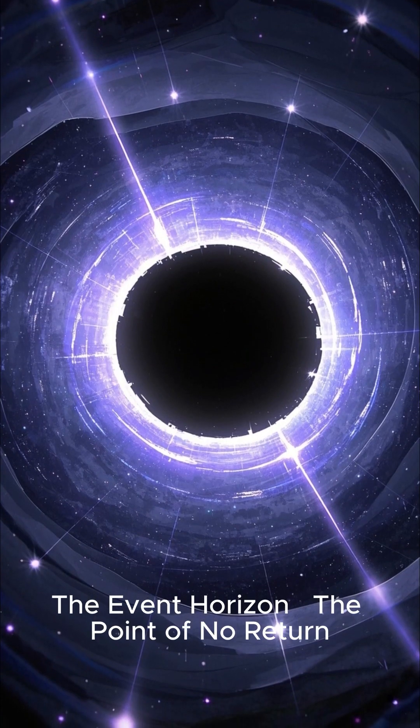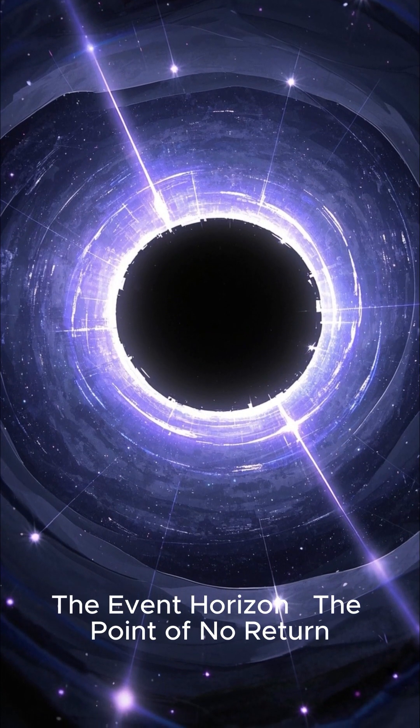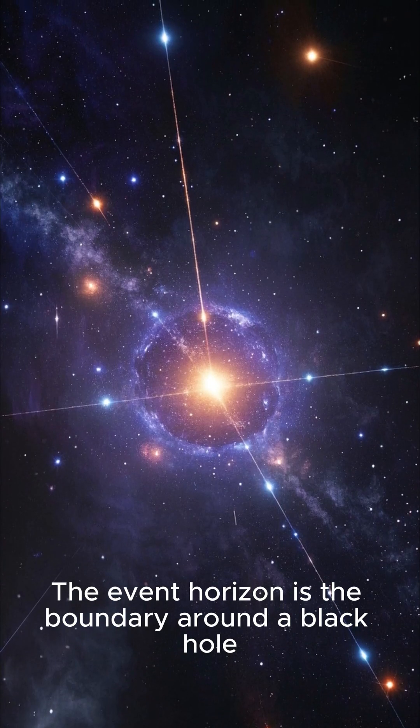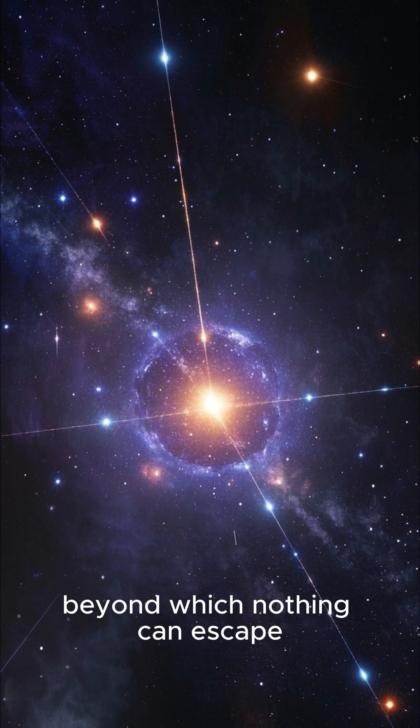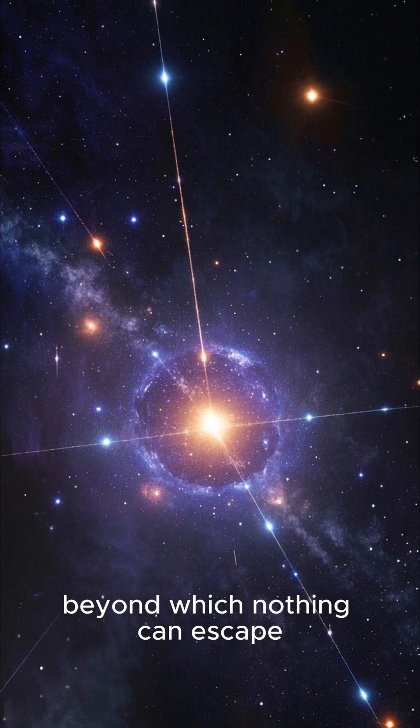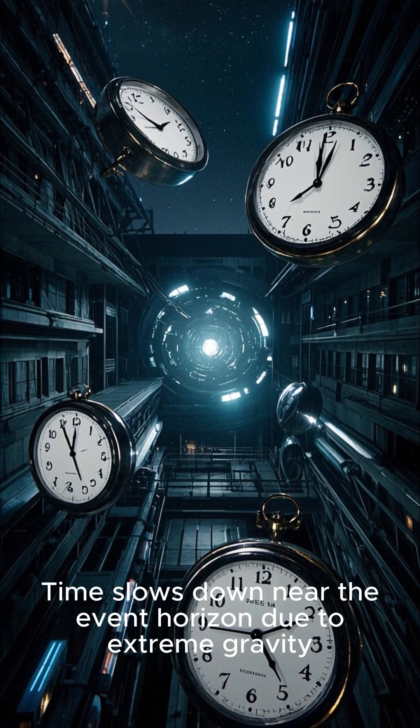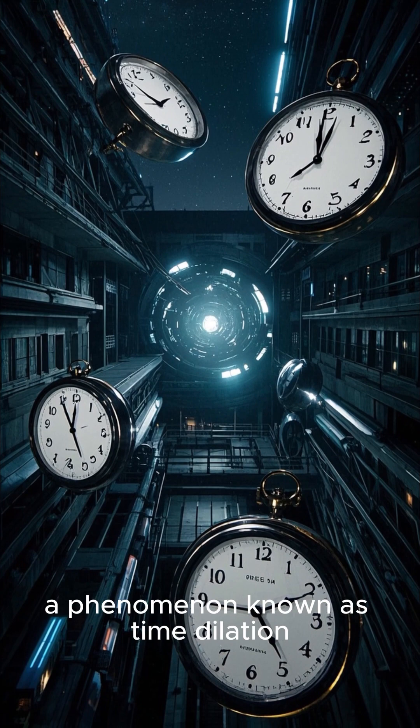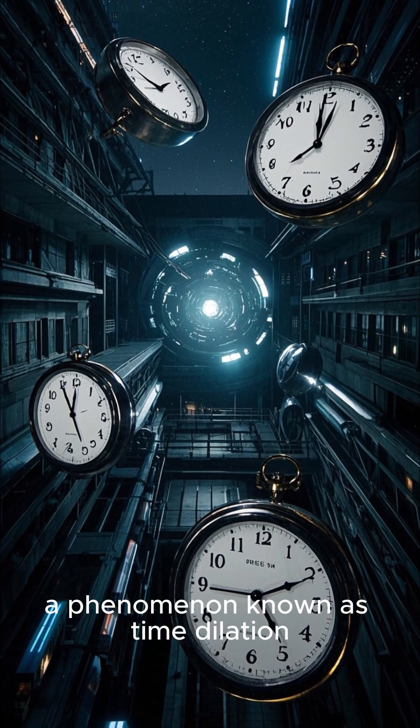Number 2, the event horizon, the point of no return. The event horizon is the boundary around a black hole beyond which nothing can escape. Time slows down near the event horizon due to extreme gravity, a phenomenon known as time dilation.